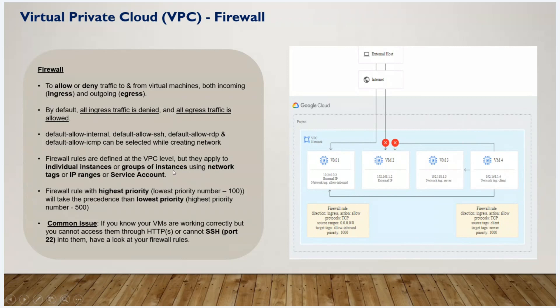We can apply firewall rules at the VPC level or at the individual server level using a group. We can apply firewall rules to a specific server using a tag name. If a server has a specific tag name, the firewall rule will be applied to that individual server.